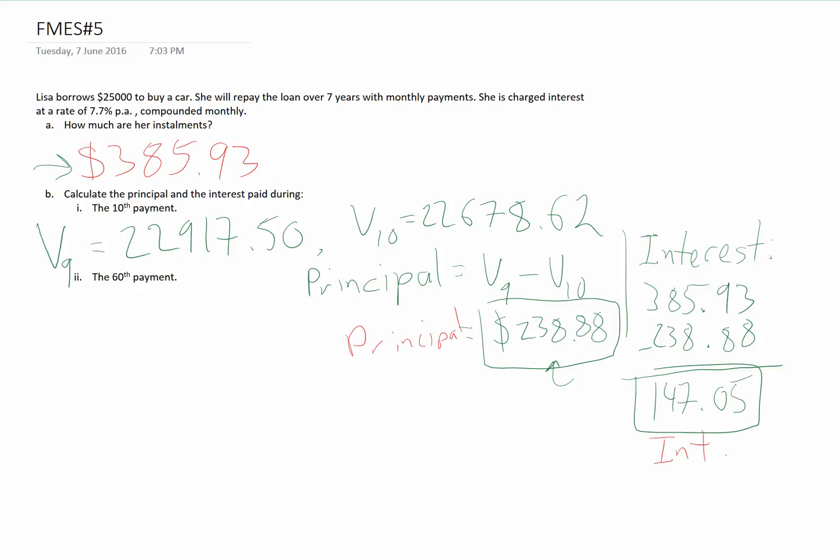Part II is the 60th payment. This is going to be a very similar process, so we'll work through this quickly. First, we need to find out how much she owes before that 60th payment. So we need V59, and then we need how much she still owes after the 60th payment. We need V60.